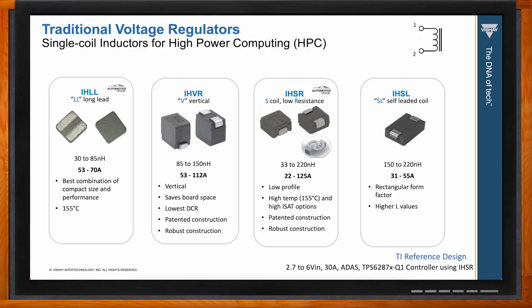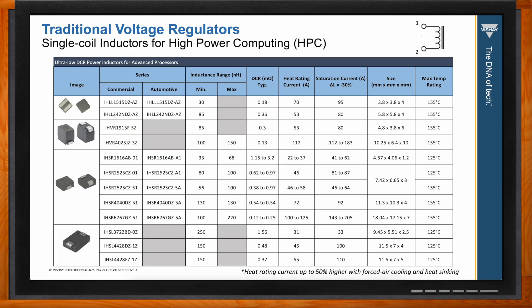The IHSL inductor lineup has the design advantage of a rectangular form factor resembling other components on the board such as MOSFETs and capacitors, enabling more compact PCB layout. IHSLs can achieve larger inductance for a given footprint than the other families. All of these single-coil inductors use powdered iron construction, responding well to active cooling and offering excellent thermal and electrical stability.